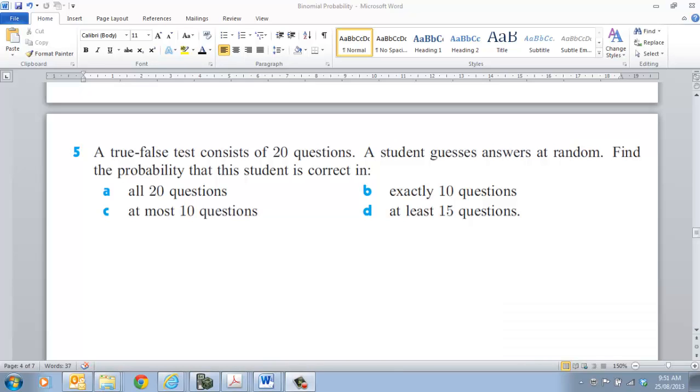Hi guys, today we're going to work through some binomial questions. These are the sort of questions you'll get in your test, so it's really about using your calculator to answer these questions. The true-false test consists of 20 questions. A student guesses answers at random, so they've got a 50% chance of getting it right or wrong. Find the probability that this student is correct in all 20 questions. So we're looking at getting a value of 20.